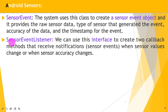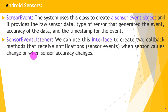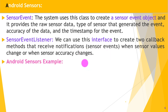The third is the SensorEvent class — the system uses this class to create a sensor event object providing raw sensor data, the type of sensor that generated the event, accuracy of the data, and the timestamp for the event. The fourth is the SensorEventListener interface, which creates two callback methods that receive notifications from sensor events when sensor values change or when sensor accuracy changes.